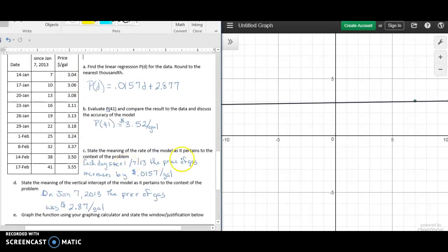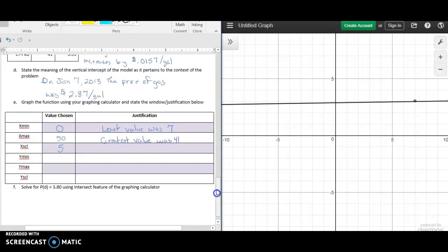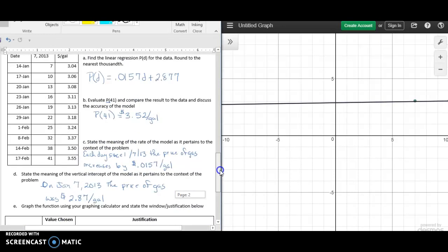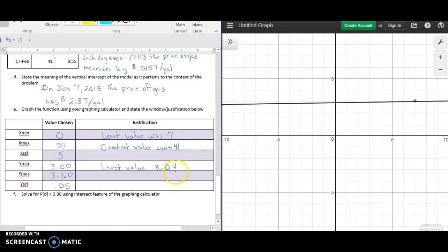Then we want to look at our outputs. It's $3.04 to $3.55. So maybe we want to go from $3 to $3.60, and we can count this by 5 cent increments. Our least value that needs to be captured is $3.04, and our greatest value was $3.55.